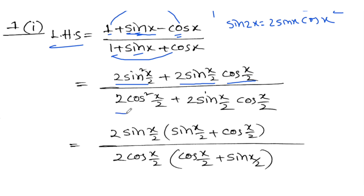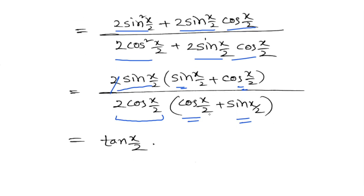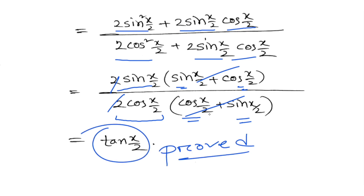So sin x equals 2 sin(x/2) cos(x/2). And 1 plus cos x equals 2 cos squared (x/2). So substituting these into the expression: the numerator becomes 2 sin squared(x/2) plus 2 sin(x/2) cos(x/2), and the denominator becomes 2 cos squared(x/2) plus 2 sin(x/2) cos(x/2). Finally, we can write tan(x/2).